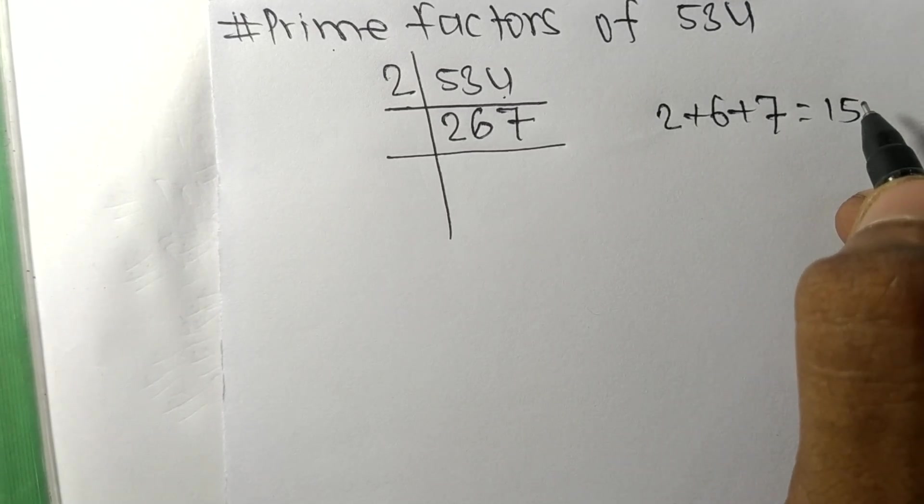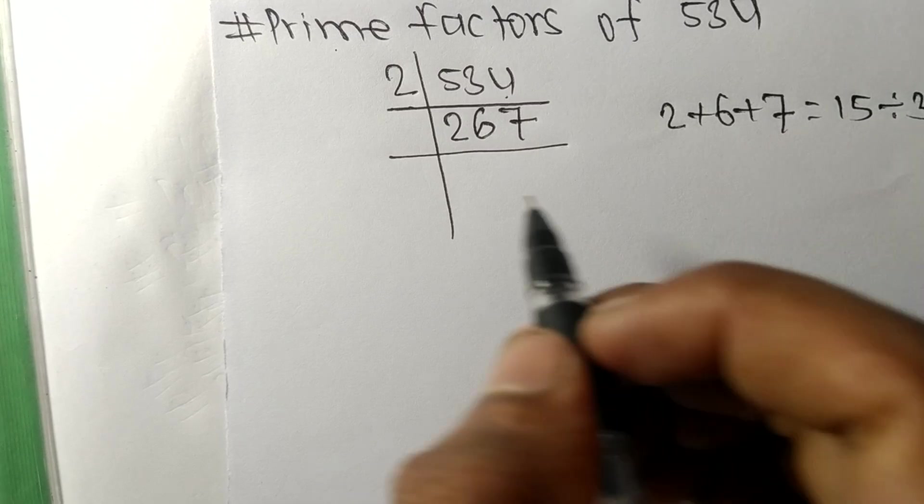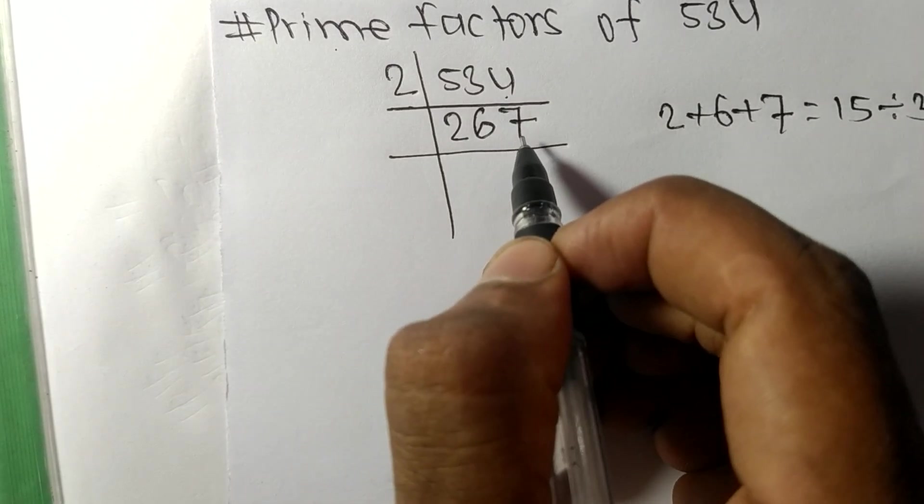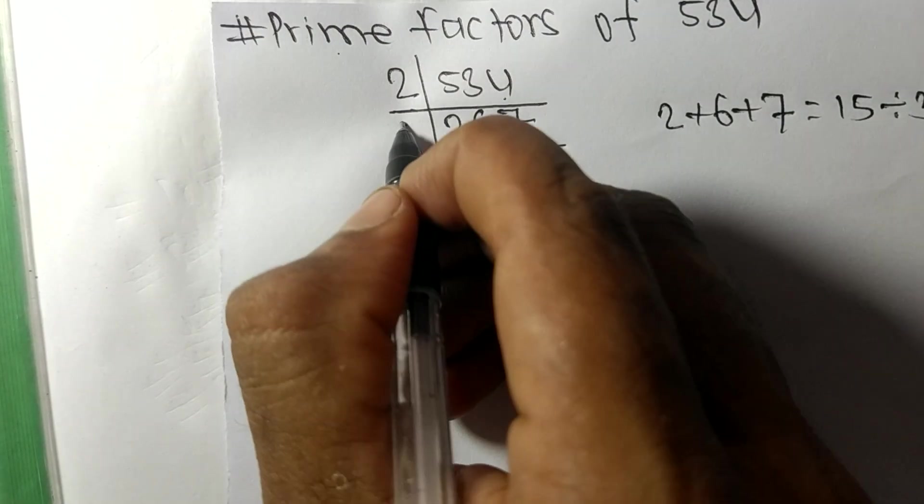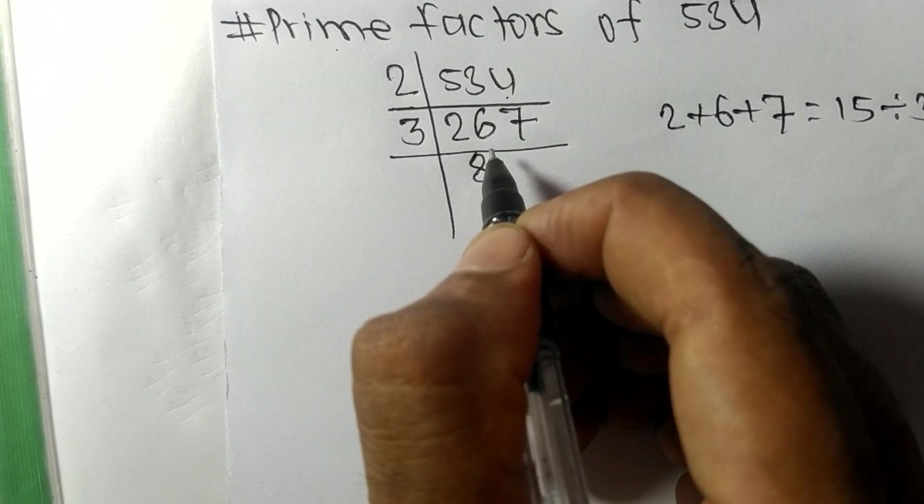3 times 8 equals 24, remainder 2. 2 and 7 is 27. 3 times 9 equals 27. Now we got 89.